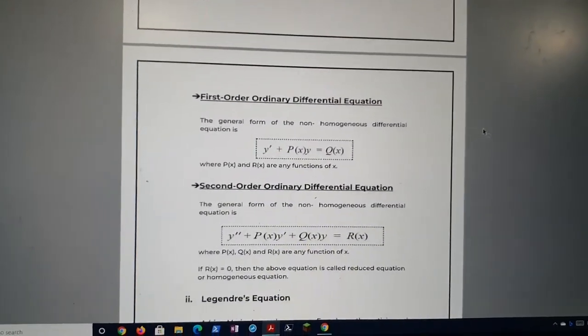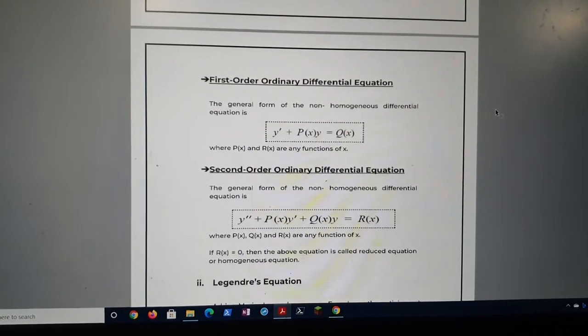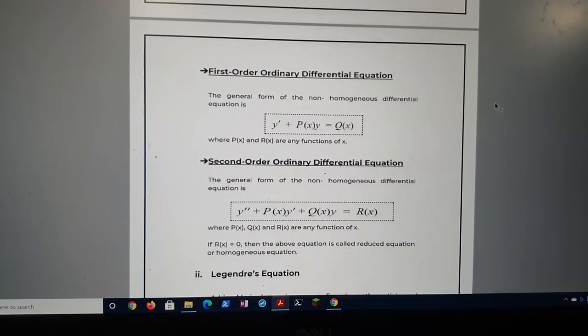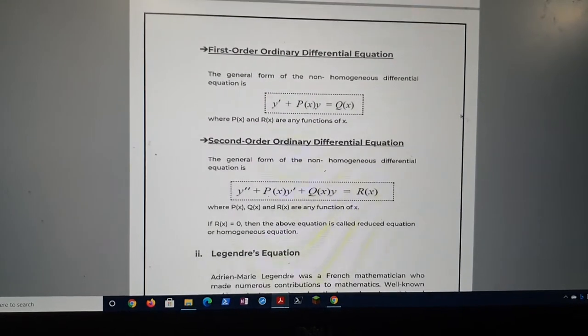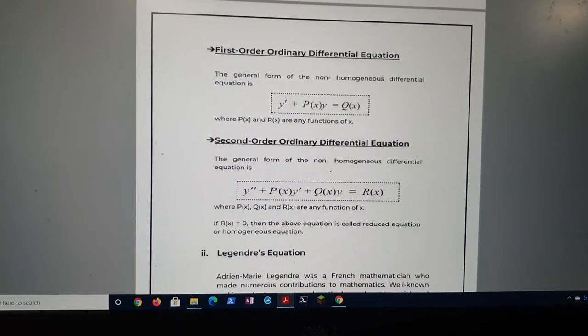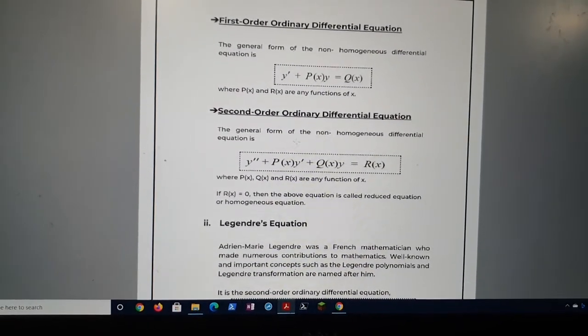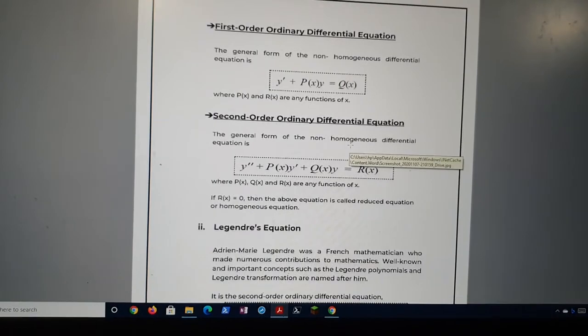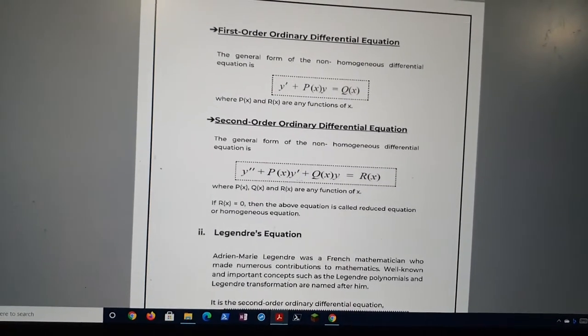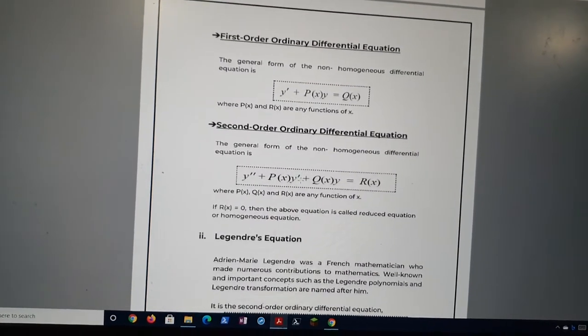First order differential equations are when the highest rate of the differential in the equation will be once. That is the y will be differentiated with respect to x only once. So here we can see y is only differentiated once. Second order differential equations are basically the highest rate will be twice. So here y as you can see y is differentiated twice. So we call it a second order differential equation.